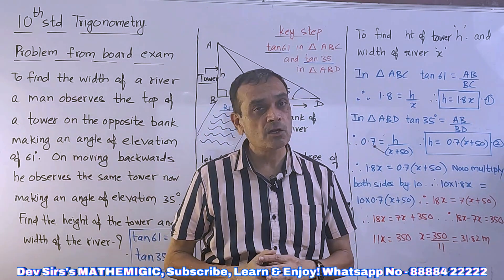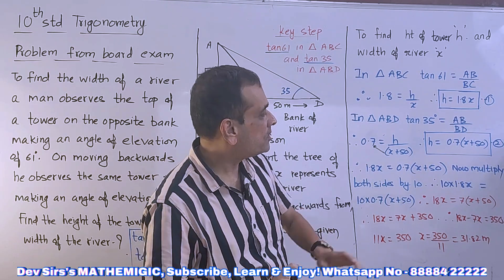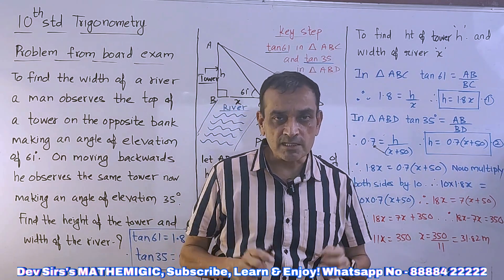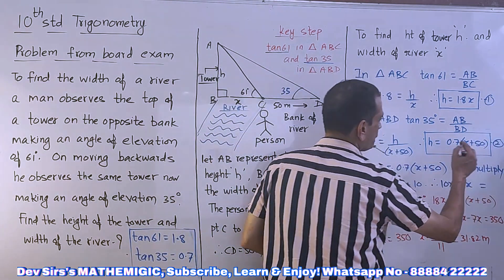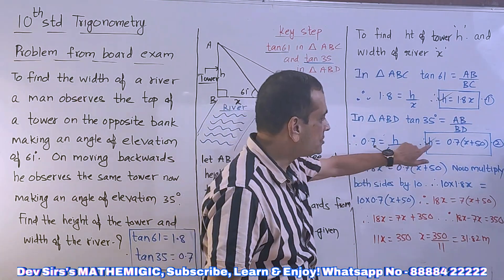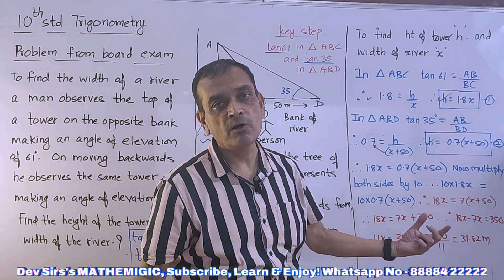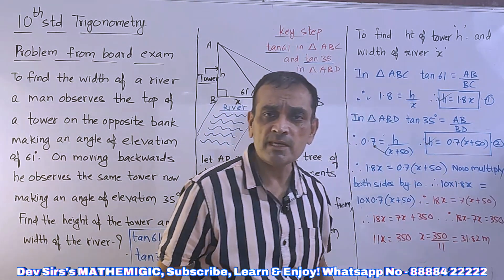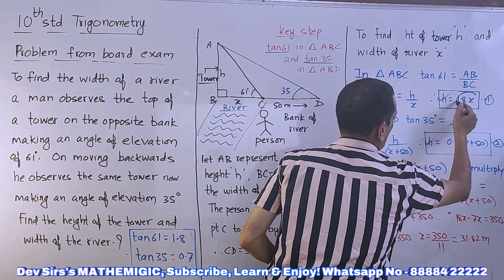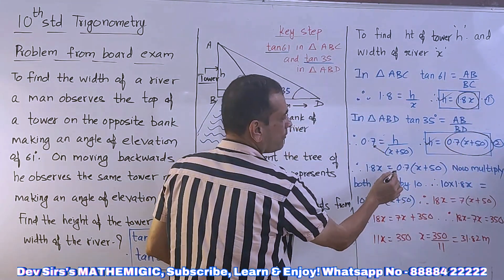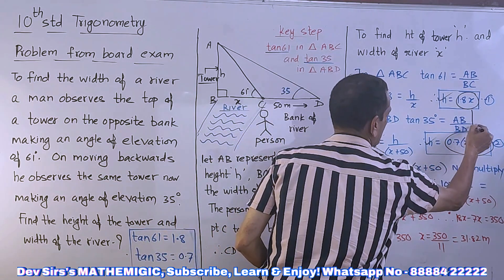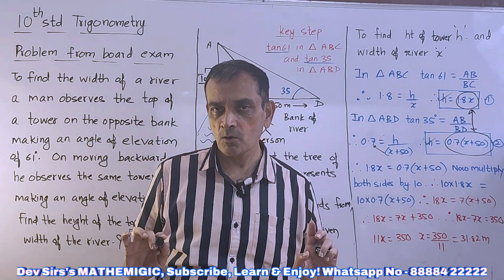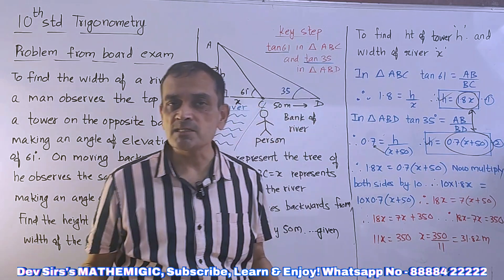Now you will realize the logic: h was separated in both equations because h appears on the left-hand side in both. By transitivity — h equals h — therefore RHS equals RHS. So we equate the two right-hand sides: 1.8x equals 0.7 into (x plus 50). That is how we get the value of x first. From both equations we got h, and then used transitivity.